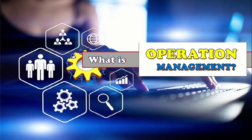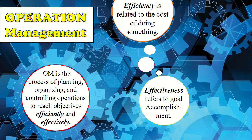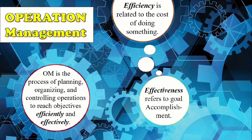Next, what is operation management? Operation management is the process of planning, organizing, and controlling operations to reach objectives efficiently and effectively. Efficiency is related to the cost of doing something. For example, when a person performs a job at lesser cost than another person performing the same job at greater cost, he is said to be more efficient.